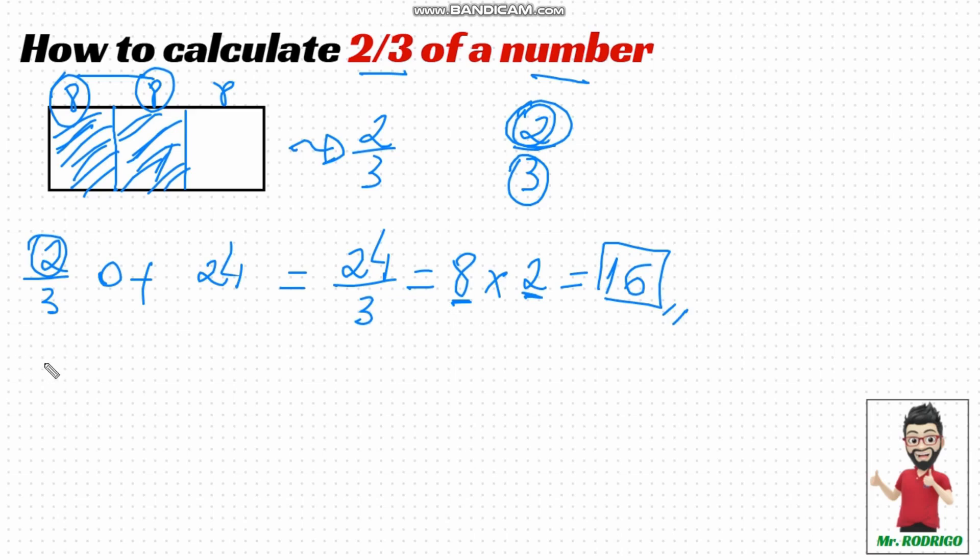Let's do one more example here. What is two-thirds of thirty? First step, take the given amount, thirty, and divide it into three equal parts. Thirty divided by three is ten. Now, since I want two-thirds, I want two of that amount. I'm going to multiply here by two. Ten times two is twenty.